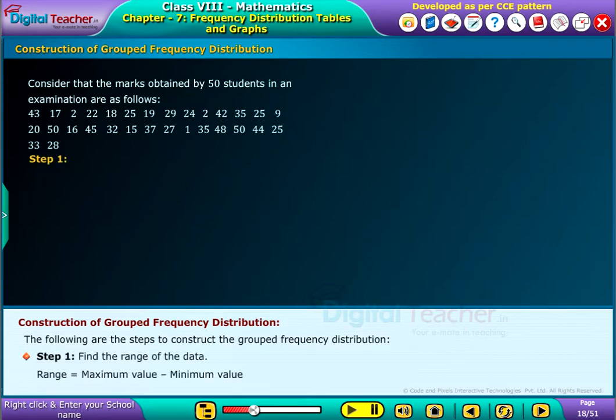Step 1: Find the range of the data. Range equals maximum value minus minimum value.